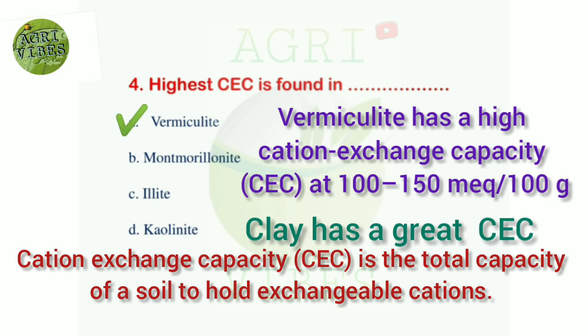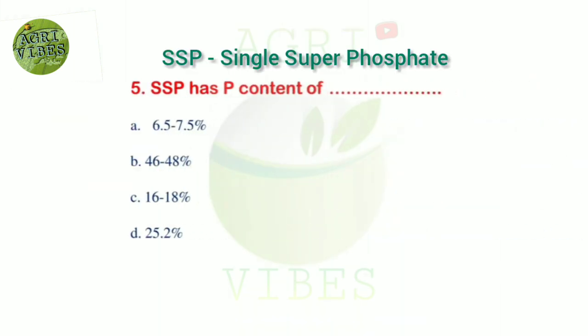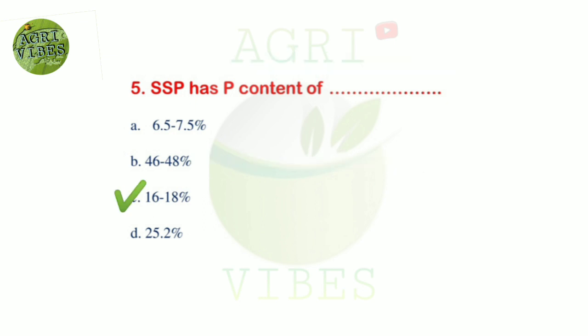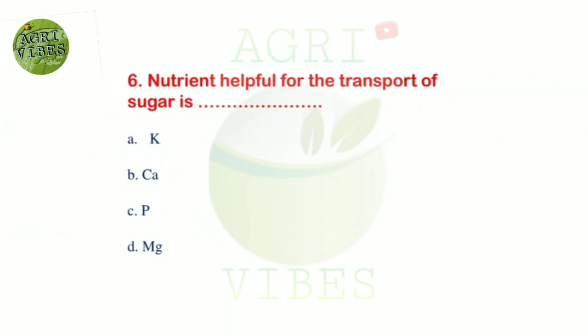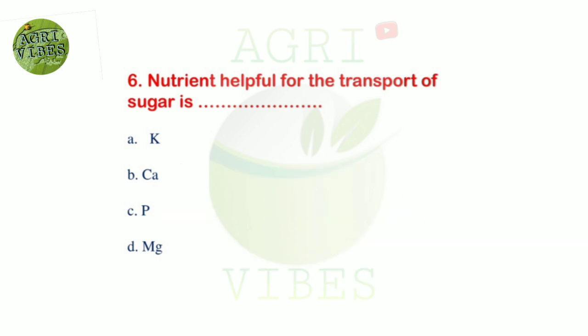Next question: single super phosphate has phosphorus content of — options: 6.5 to 7.5 percent, 46 to 48 percent, 16 to 18 percent, and 25.2 percent. Correct answer is option C, 16 to 18 percent. Single super phosphate has phosphorus content of 16 to 18 percent. Next question: nutrient helpful for the transport of sugar is — options: potassium, calcium, phosphorus, and magnesium. Correct answer is option A, potassium.